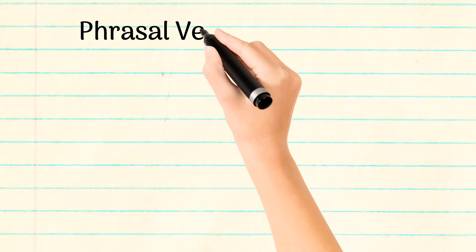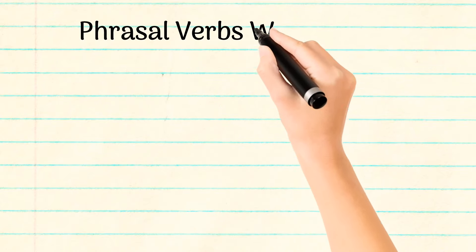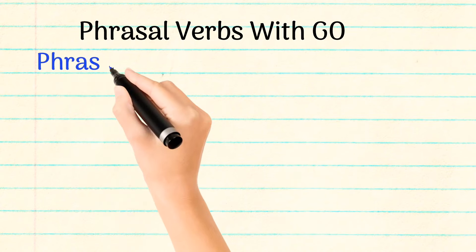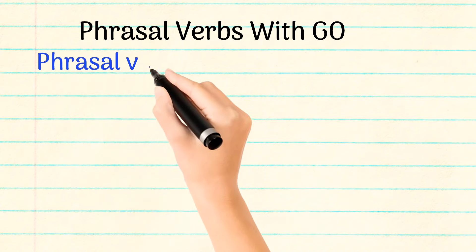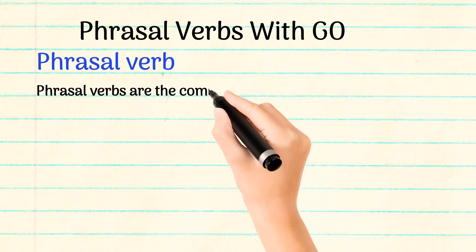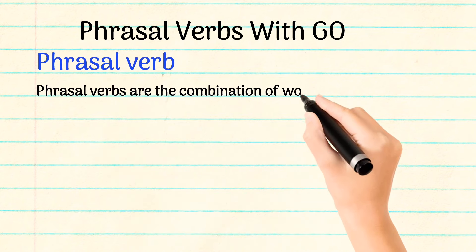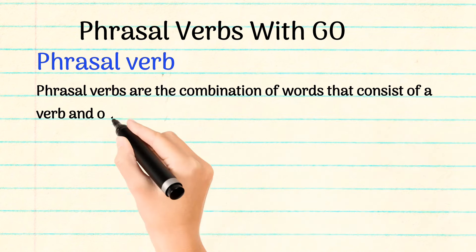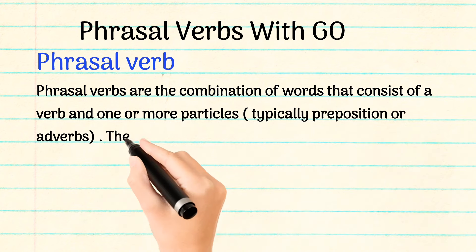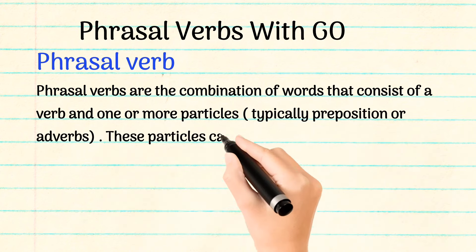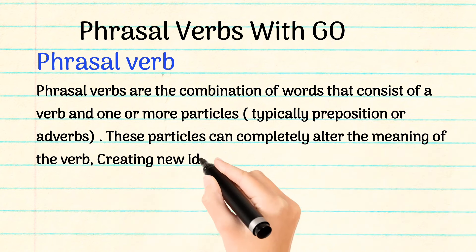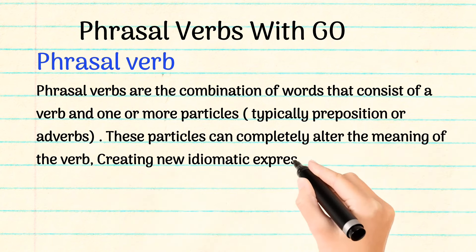Phrasal verbs with go. Phrasal verbs are the combination of words that consist of a verb and one or more particles, typically prepositions or adverbs. These particles can completely alter the meaning of the verb, creating new idiomatic expressions.